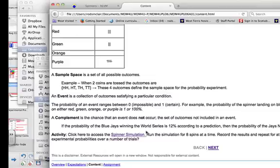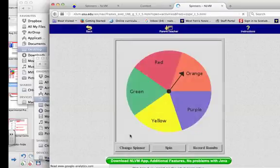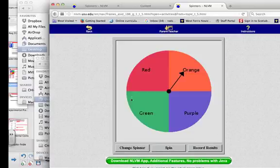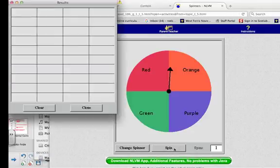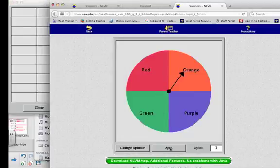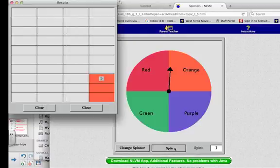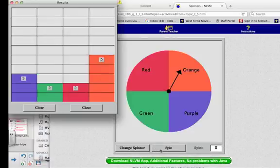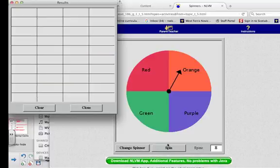So at the bottom of your page, in the content, you'll see the spinner simulation. And you can actually change the spinner, so that we'll have zero yellows. So now we have a spinner similar to what you saw before. So what we can do is we can spin, and you can record these results. And you can change the number of spins as well. So if we want to do them all at once. And you can clear and do a number of trials.